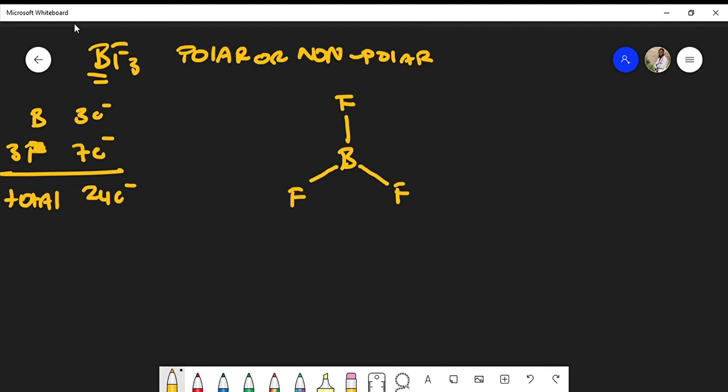Fluorine on the other hand must satisfy the octet rule, and at this point we only have two electrons around each fluorine. The only other way for us to fulfill our Lewis structure is actually to place electrons on fluorine in the form of lone pairs. This becomes two, four, and six, and with this single bond that makes eight, so the octet for fluorine is satisfied on the right side.